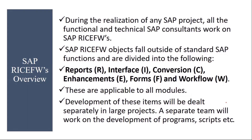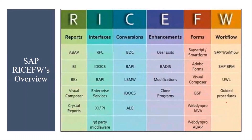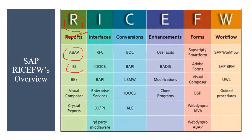The first one: R means Reports. Standard SAP comes with some standard reports, but on top of that, if you need any extra custom reports, you have to go for custom report development. These reports can be developed by the ABAP team, BI team, or through various other methods. I'll show you a custom report in the system, and in the subsequent sessions we will see how to write a functional specification document for a custom report using a real-time example.